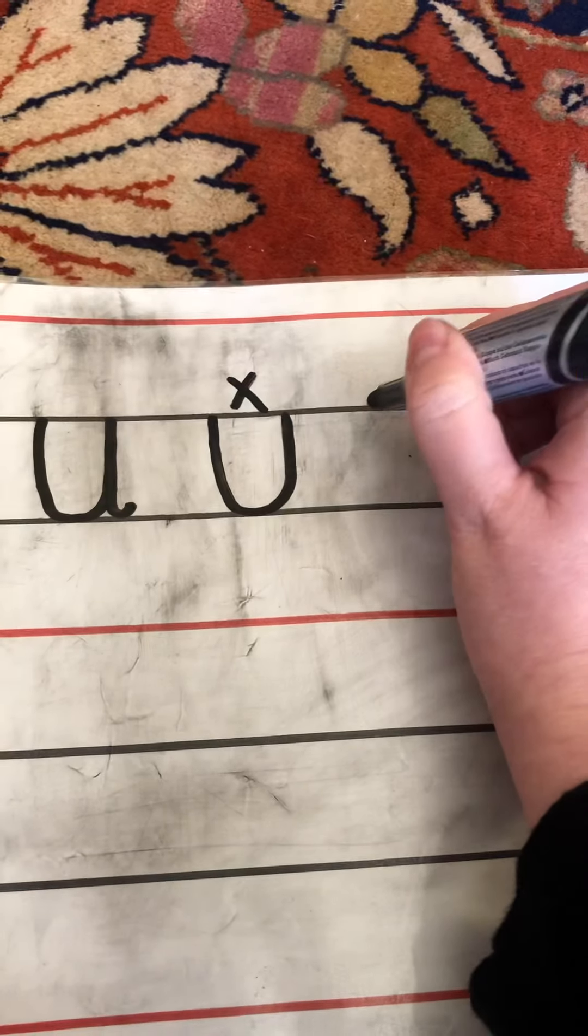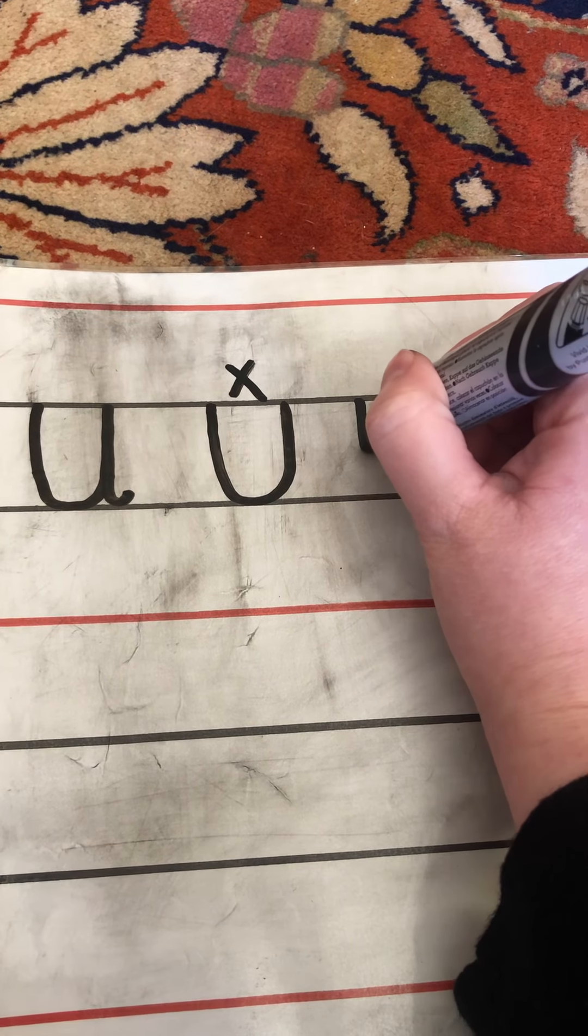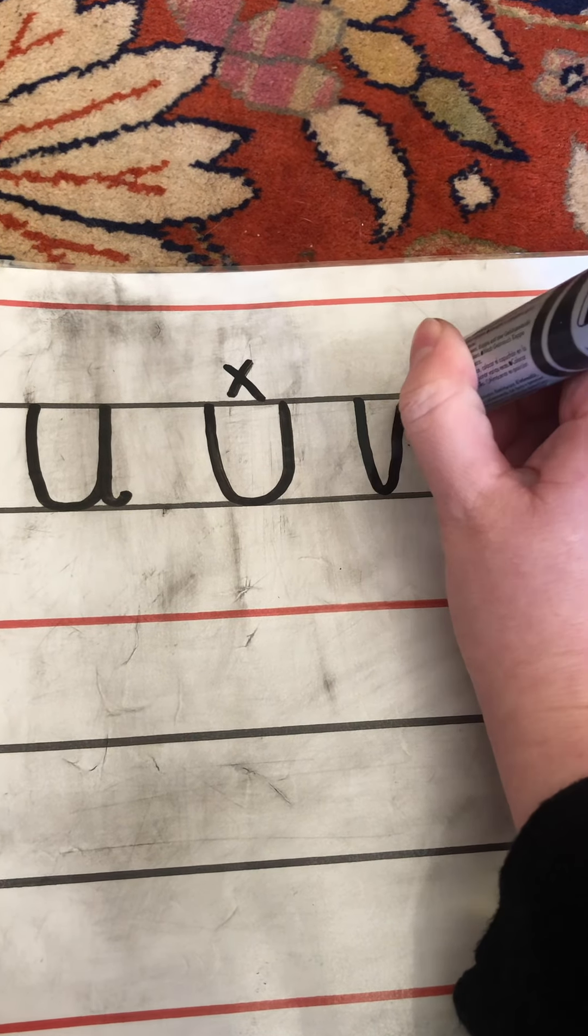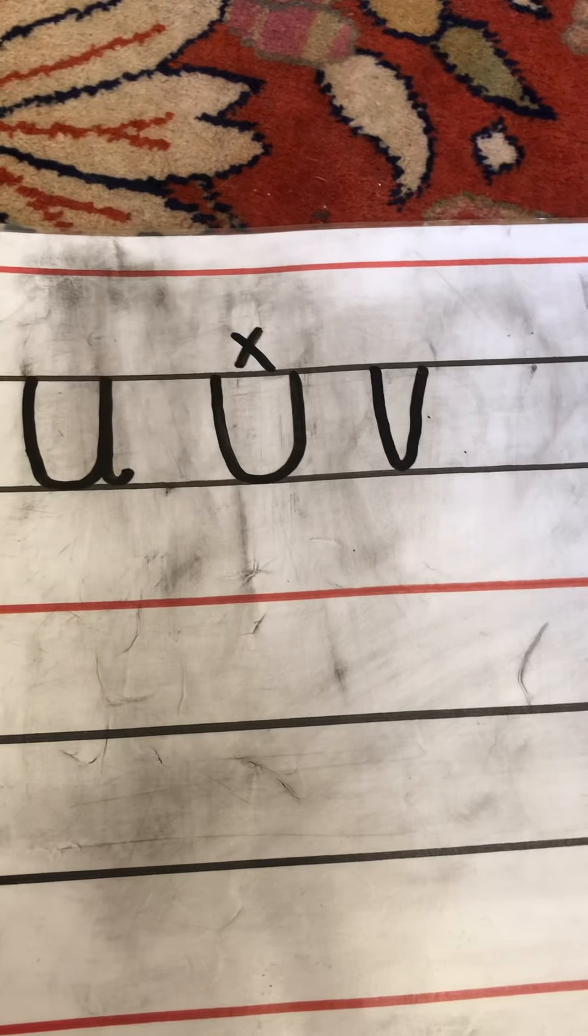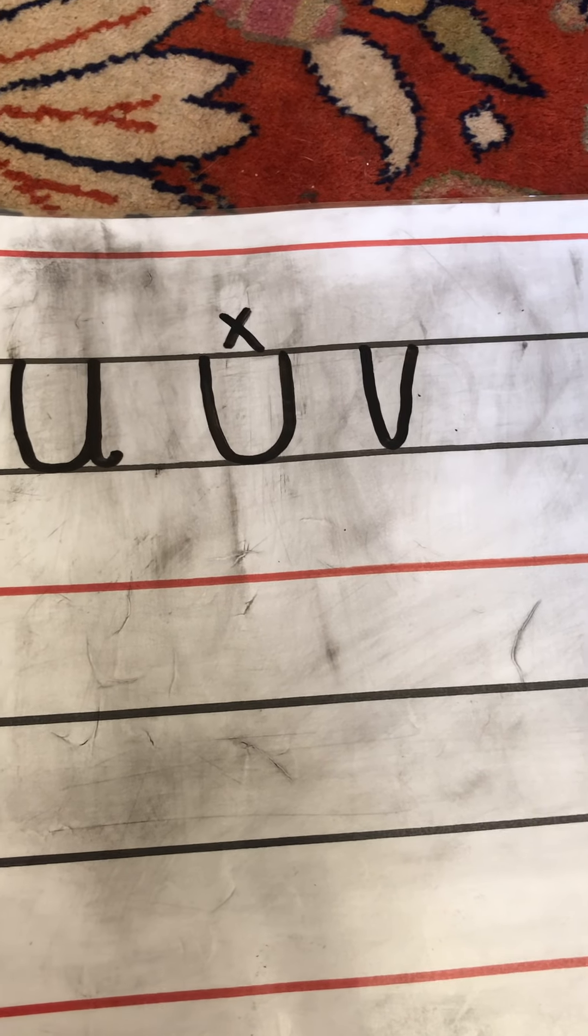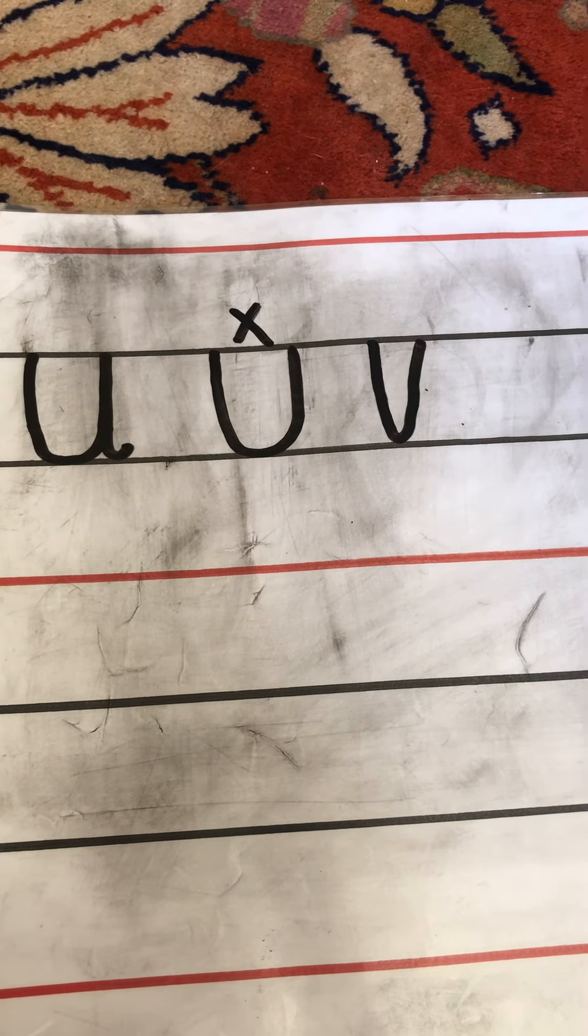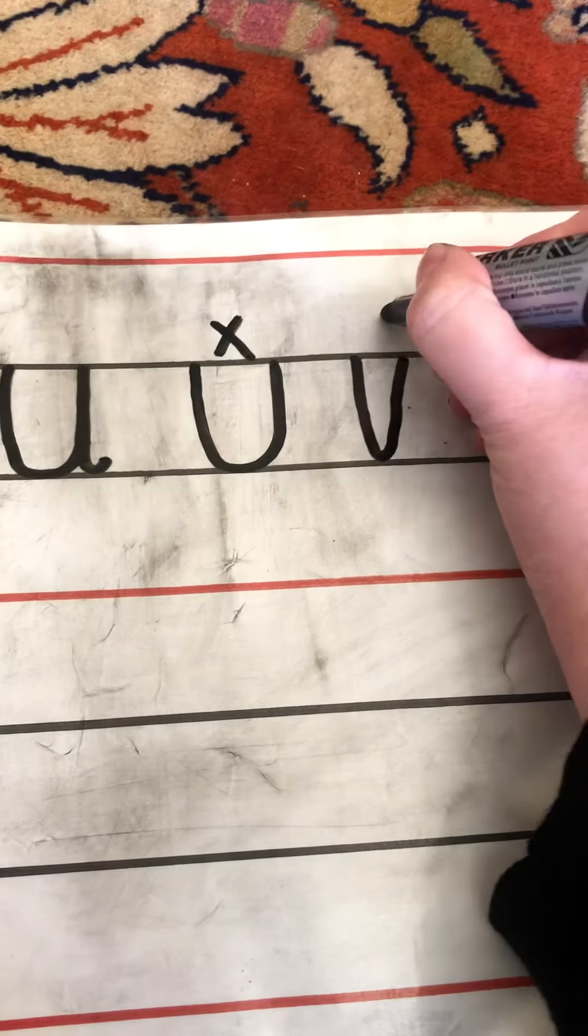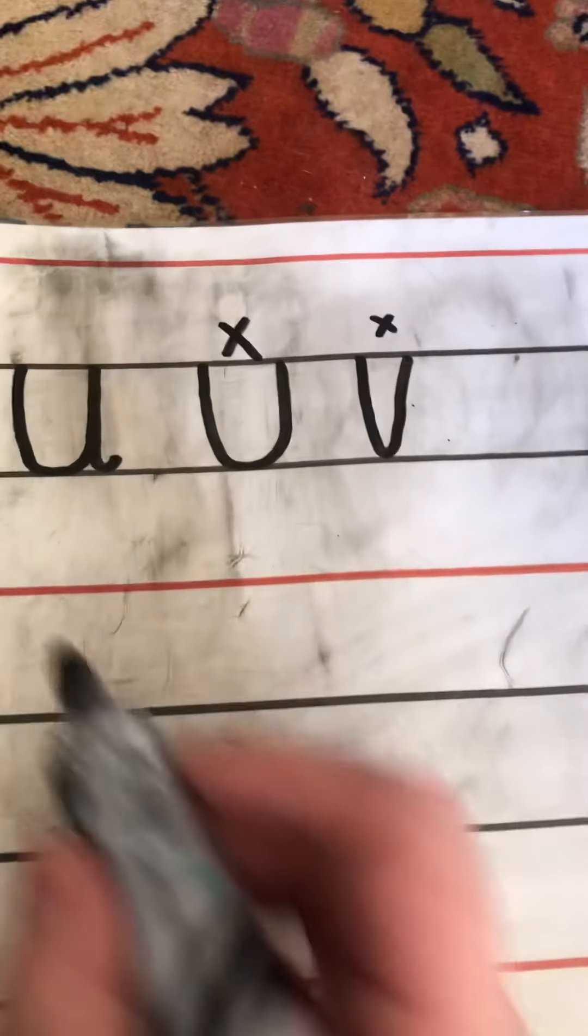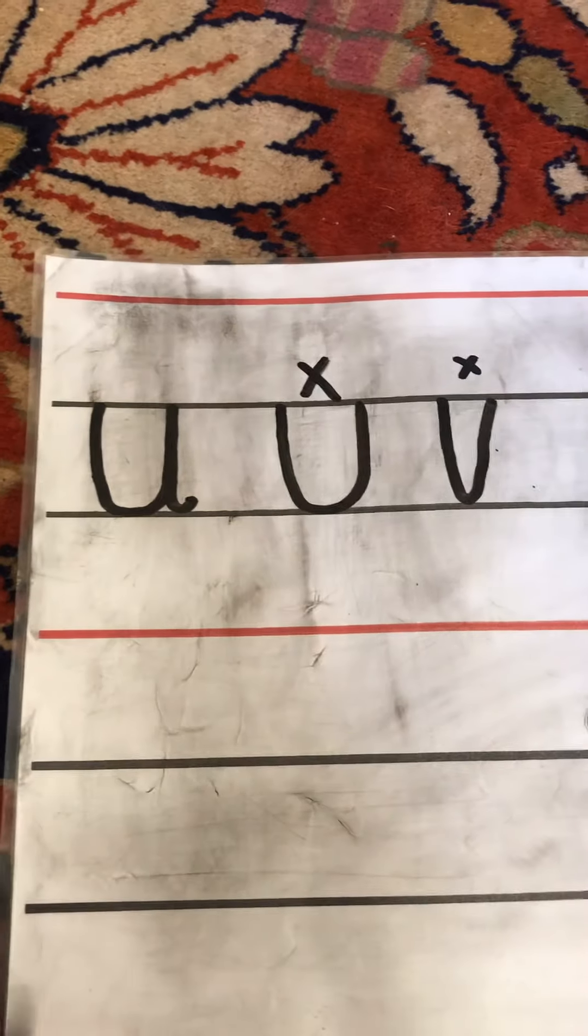And some children go down and up like this. And that's not right either. Can you tell me why? Yeah, because it looks like a letter V. The letter U doesn't have any pointy bits.